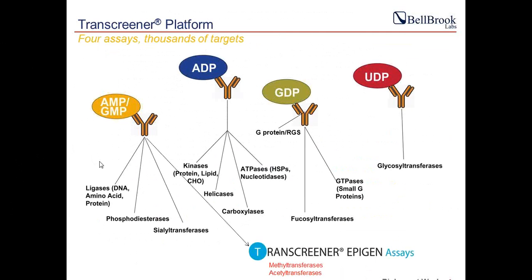Another question: do you need to consider equilibration time between ADP generated by the enzyme and the antibody? The equilibration time for the ADP antibody is around 5 to 10 minutes — we have data showing equilibration in 5 minutes, which enables kinetic measurements. Technical manuals say 60 minutes just to be safe, but theoretically 5 minutes is sufficient for the ADP antibody.